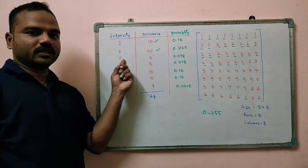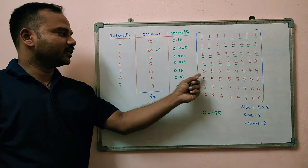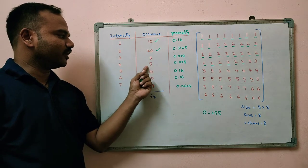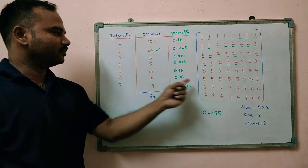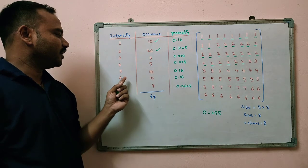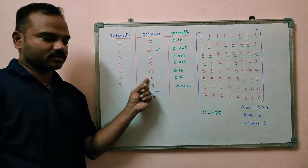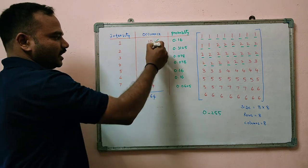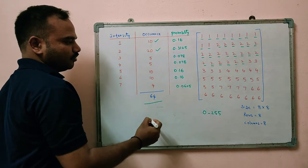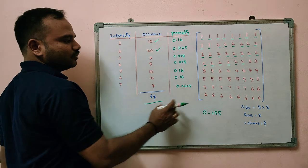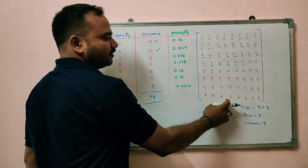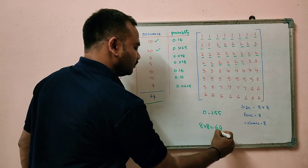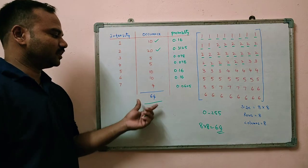The next intensity value occurring in our considered image is 3, and it occurs 5 times. Intensity value 4 also occurs 5 times. Intensity value 5 occurs 10 times. Intensity value 6 occurs 10 times. Intensity value 7 occurs 4 times. If we add the occurrence of all intensity values, it is 64, and it will be exactly equal to the number of pixels in our image — 8 by 8, that is 64 pixels.